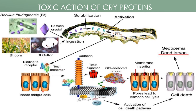This toxin monomer binds to the insect midgut cells and starts to produce pores, which lead to osmotic cell lysis. This then leads to activation of the cell death pathway, due to which the larva will start to die.